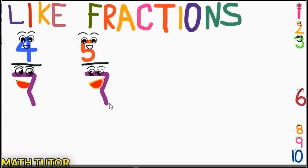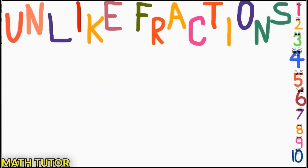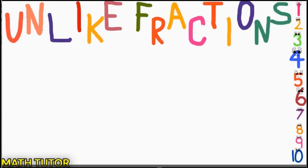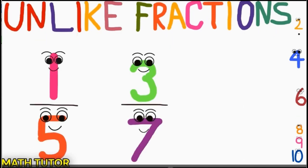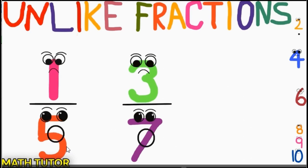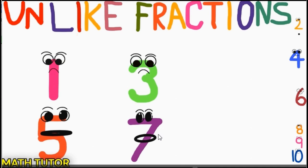Now let us see what are unlike fractions. Unlike fractions are where the denominator will be different. For example, 1/5 and 3/7 — here 5 is the denominator and here 7 is the denominator, not the same. So this is an unlike fraction.